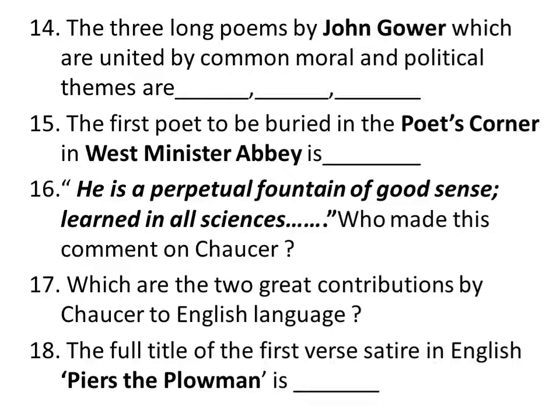Chaucer used rhyme royal for the first time in his Troilus and Criseyde. The full title of the first verse satire in English, Piers the Plowman, is The Vision of William Concerning Piers the Plowman. It is a satire on humanity in general and the corrupted clergy of the time in particular.